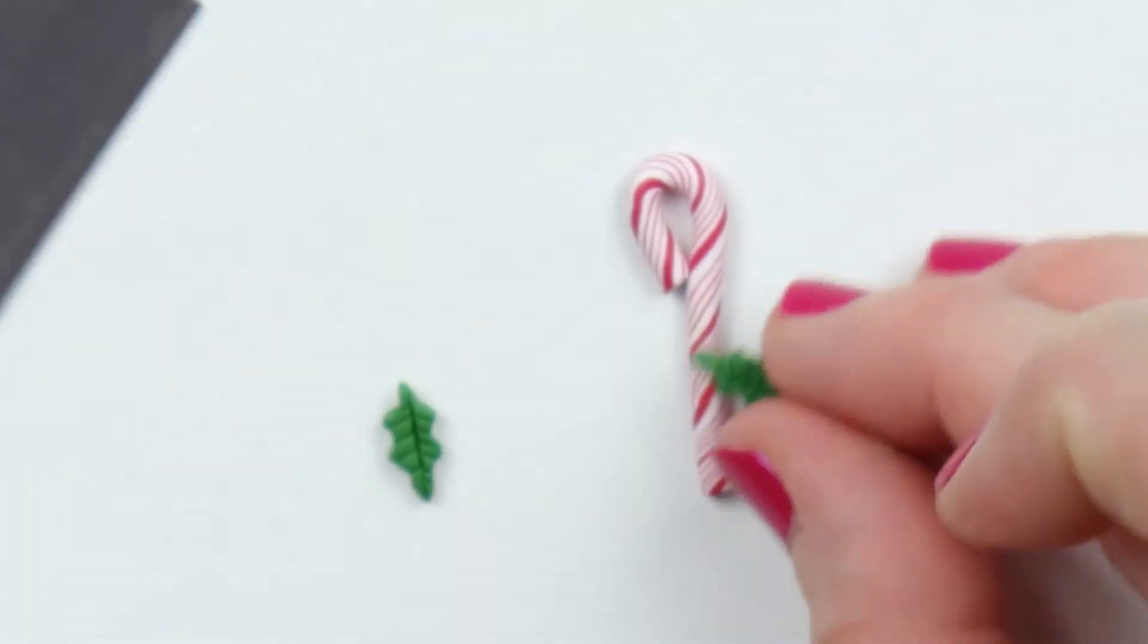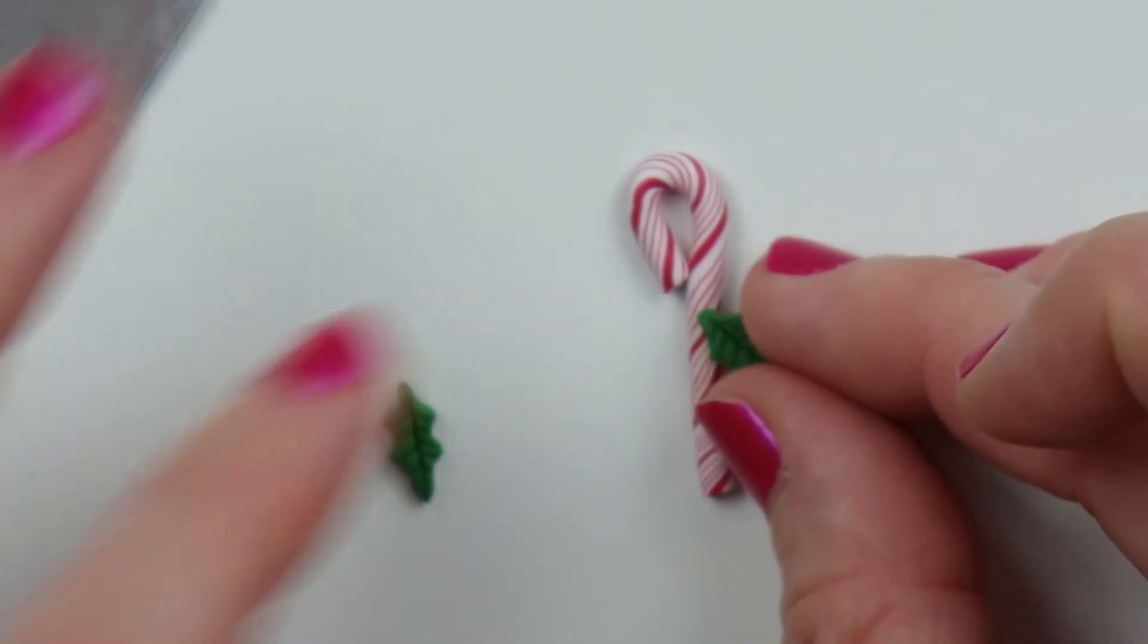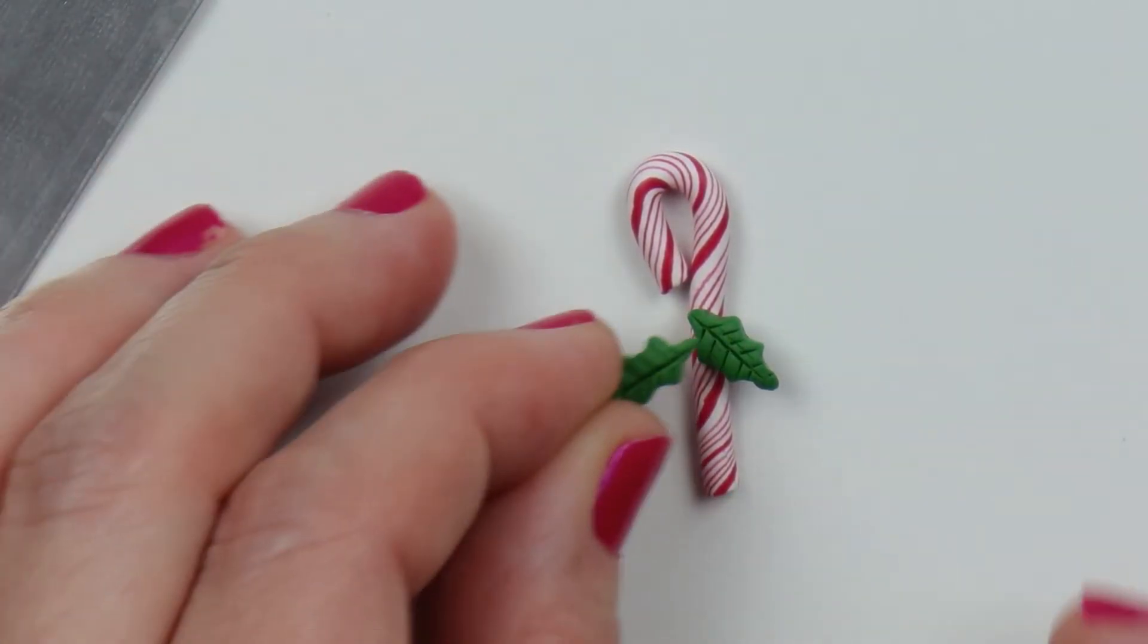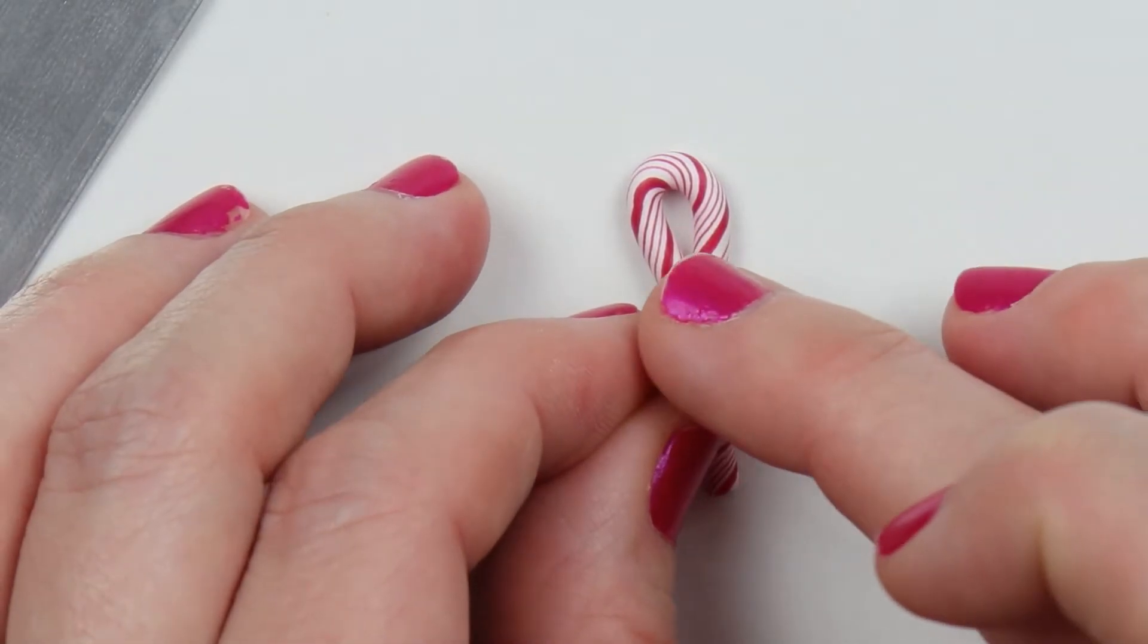Once you have those two all ready, just place them on the candy cane right below that bend. Just stack them on top of each other very neatly.